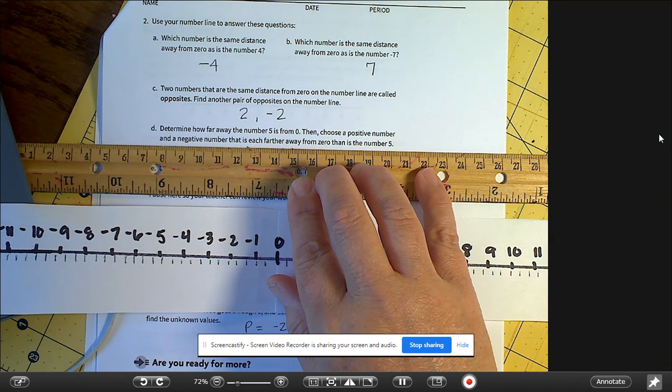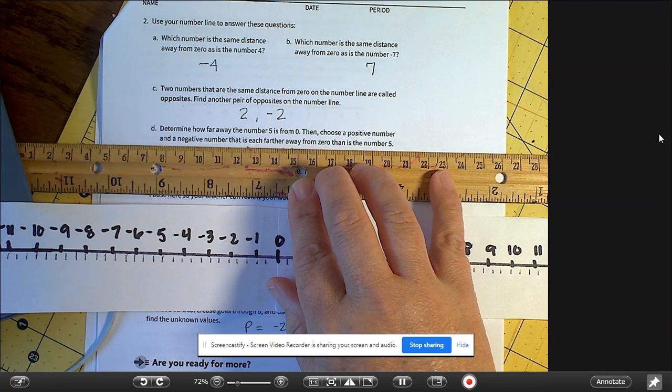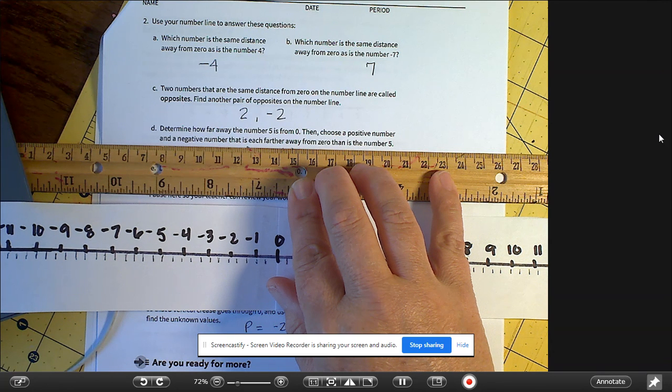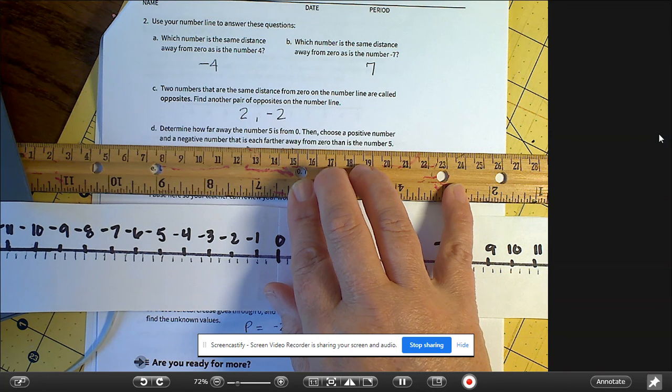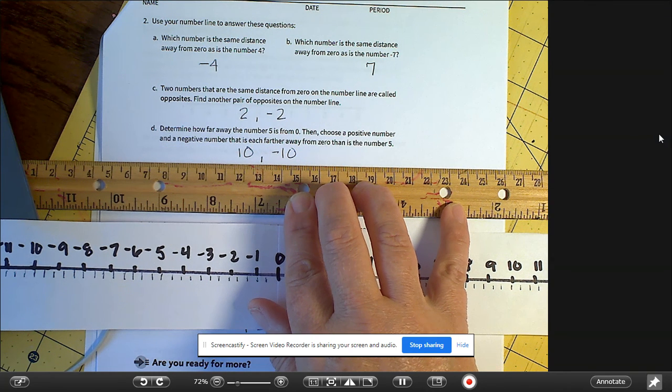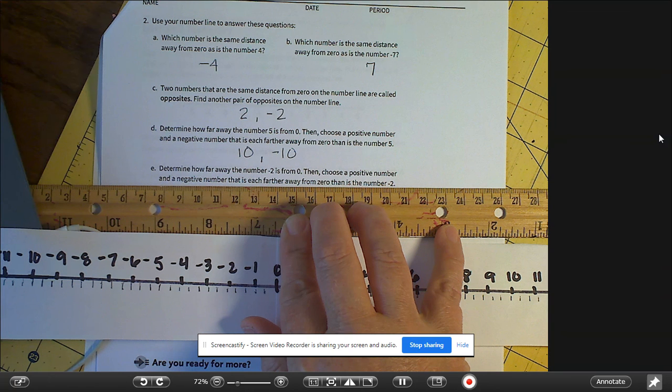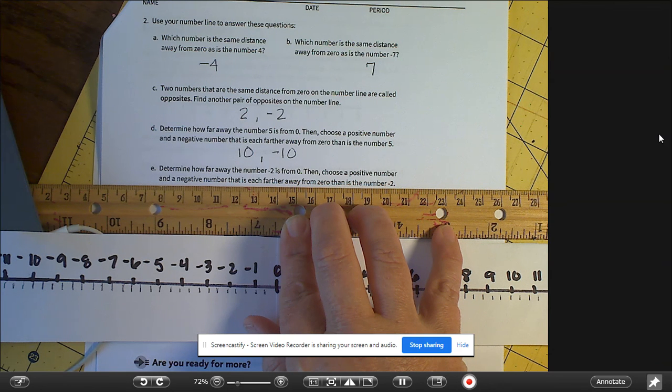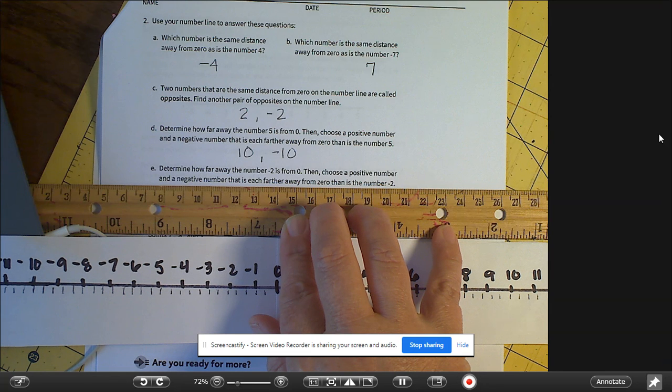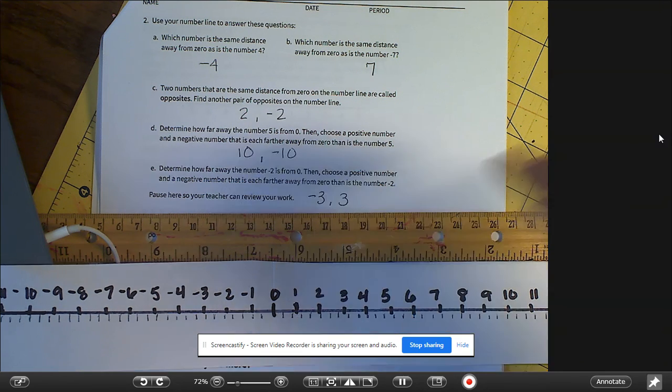D says determine how far away the number 5 is from zero. Well, you know, that's 5. So then choose a positive number and a negative number that is each farther away from zero than the number 5. So I chose 10 and negative 10.